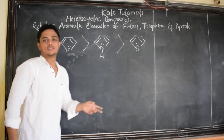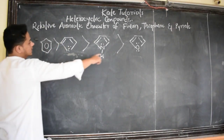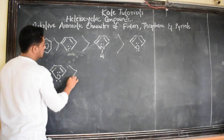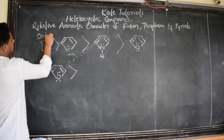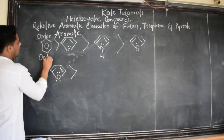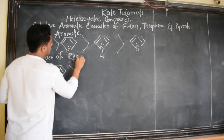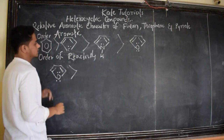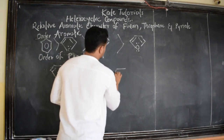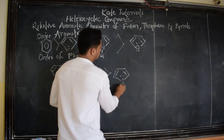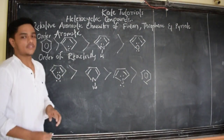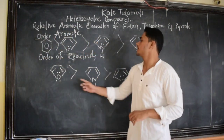Then what is the order of reactivity? Since aromaticity and reactivity are inversely related — the less aromatic a compound is, the more reactive it will be. So this is the order of reactivity: furan comes first, followed by pyrrole, followed by thiophene, and finally benzene. Benzene will be least reactive. But in practice, the order of these two — furan and pyrrole — will be shifted.